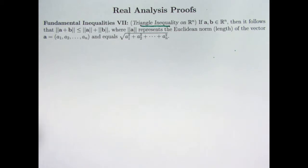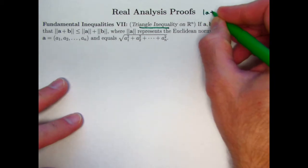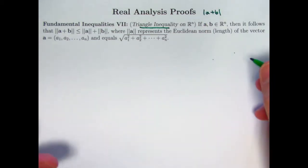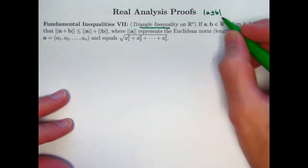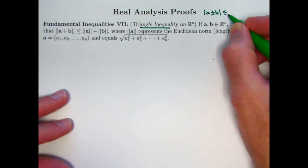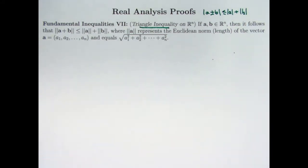Two videos ago, we looked at the triangle inequality on the real line, the one-dimensional triangle inequality. It said that the absolute value of the sum or difference of two numbers, a plus or minus b, is less than or equal to the sum of their absolute values. That was the triangle inequality in one dimension where a and b are real numbers. It's not clear why it was called the triangle inequality.